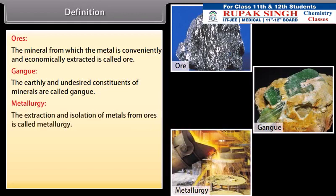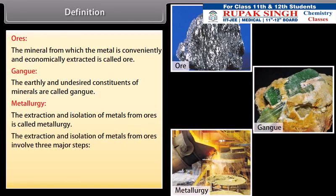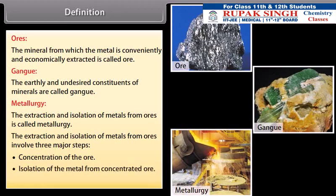Metallurgy. The extraction and isolation of metals from ores is called metallurgy. The extraction and isolation of metals from ores involves three major steps: concentration of the ore, isolation of the metal from concentrated ore, and purification of the metal.